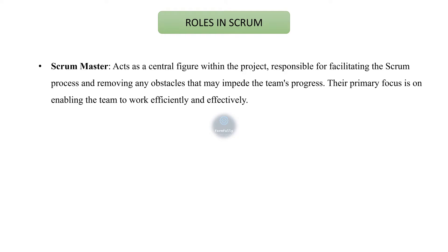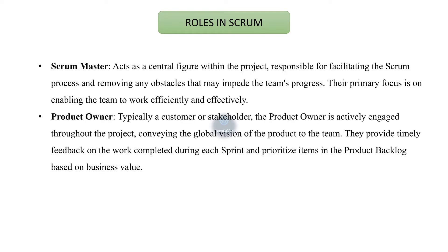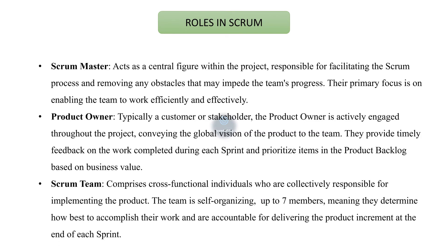Their primary focus is on enabling the team to work efficiently and effectively. The second role is Product Owner, which is typically a customer or stakeholder. The Product Owner is actively engaged throughout the project, conveying the global vision of the product to the team. They provide timely feedback on the work completed during each sprint and prioritize items in the product backlog based on business value.